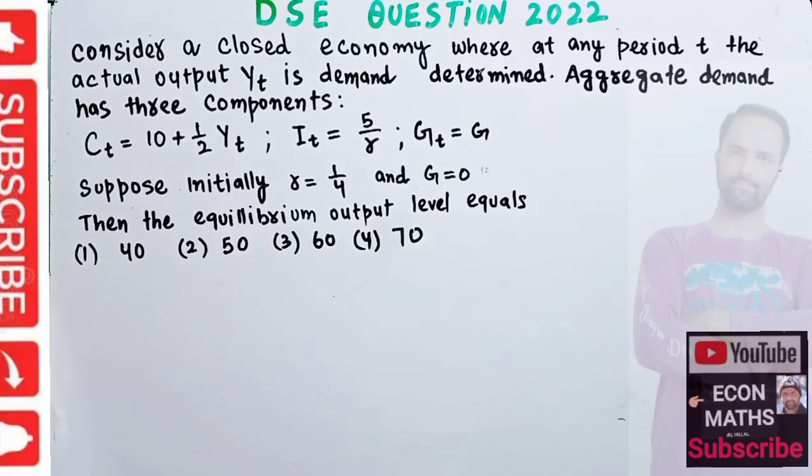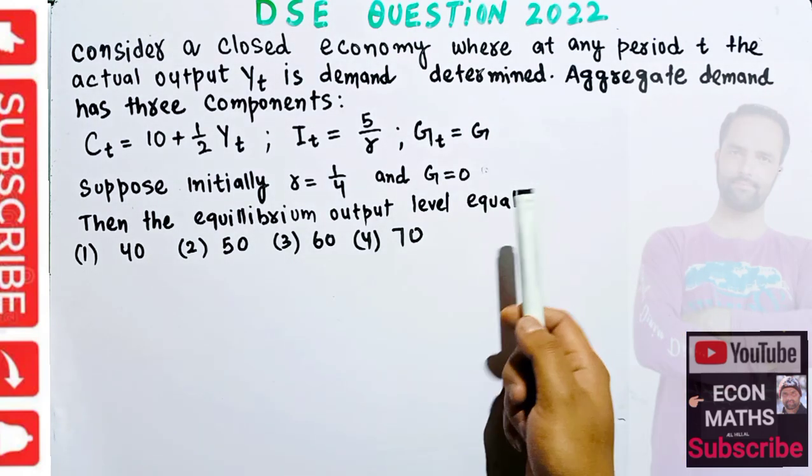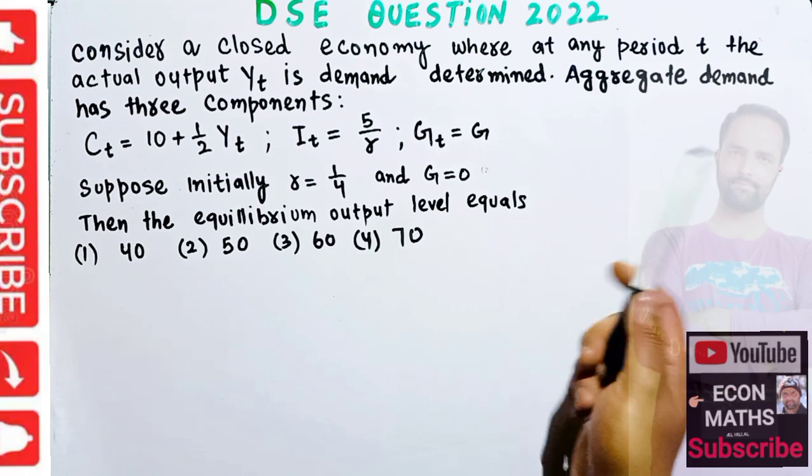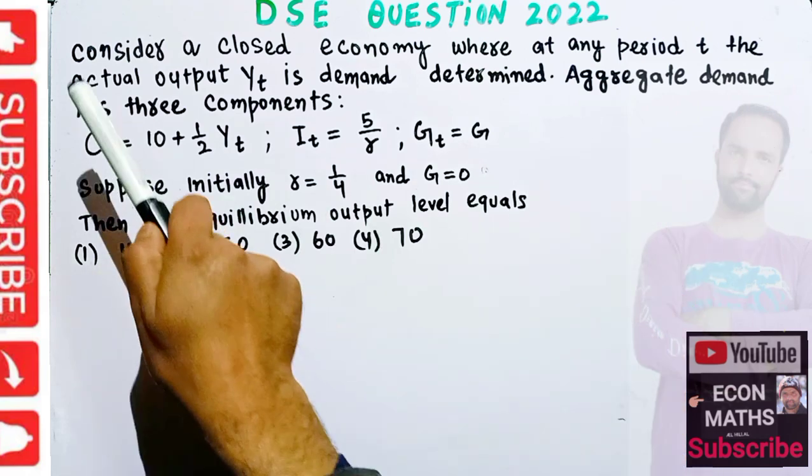In this video we will solve a numerical problem on how to find equilibrium output level from the given consumption, investment, and government expenditure function. This question was asked in DSE Economics paper of 2022.